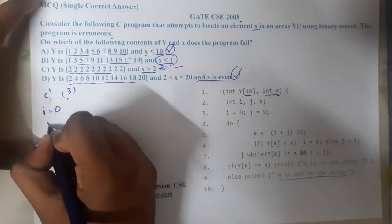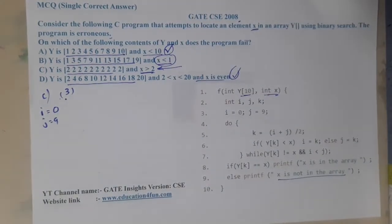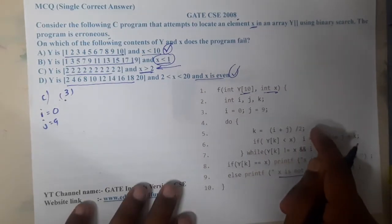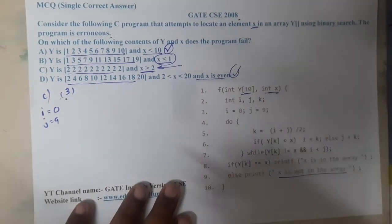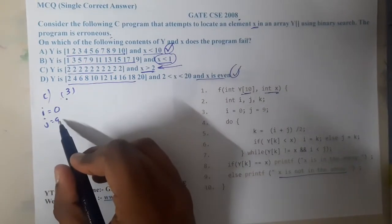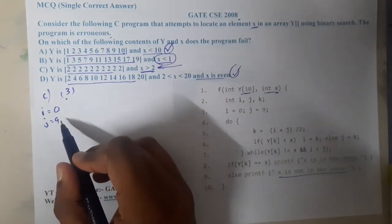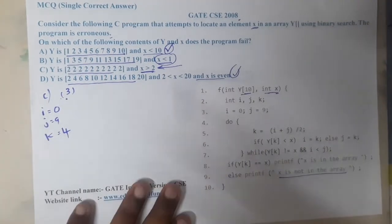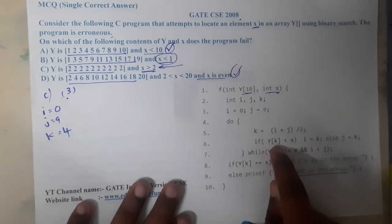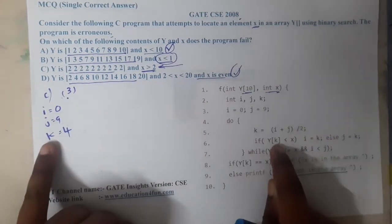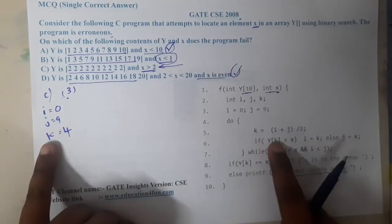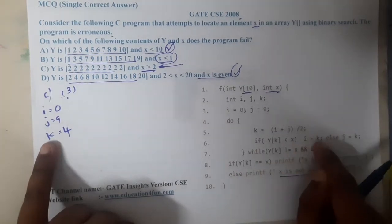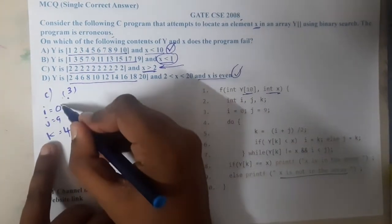Initially, i = 0 and j = 9. We start a do-while loop and compute k = (i + j) / 2, which is 9 / 2 = 4.5, so k = 4 as an integer. We check if y[k], which is y[4] = 2, is less than x = 3. Yes, so we set i = k, making i = 4.